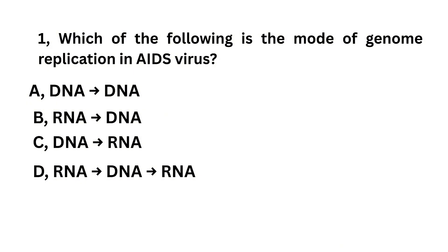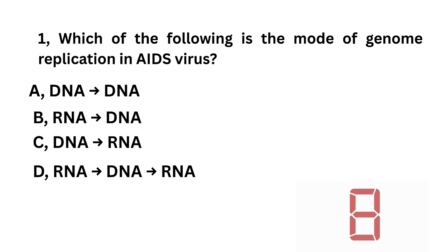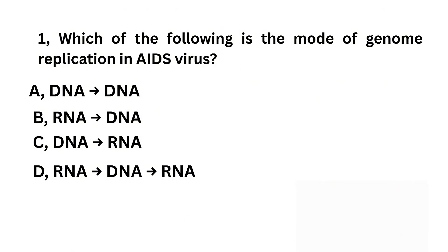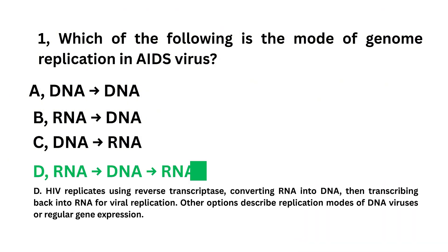Which of the following is the mode of genome replication in a retrovirus? DNA to RNA, RNA to DNA, DNA to RNA, RNA to DNA. DNA to RNA is the correct answer.